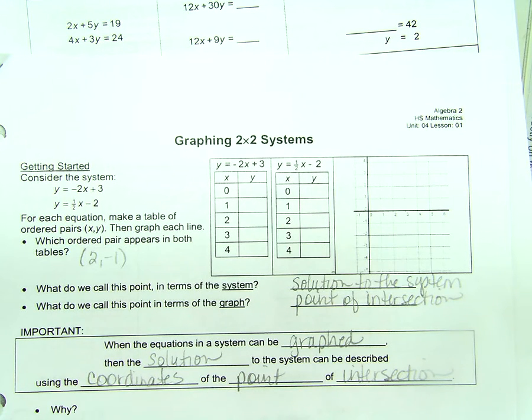So for a linear system, a linear system which means two lines or more than that, we'll go with two right now, you can only have either one solution, no solutions, or infinitely many solutions.